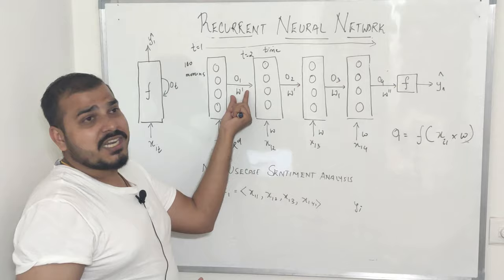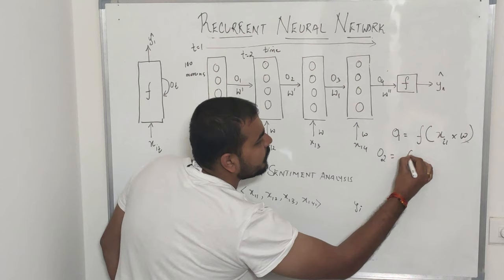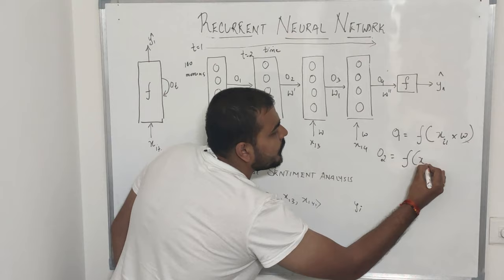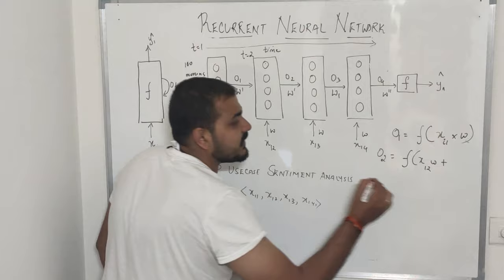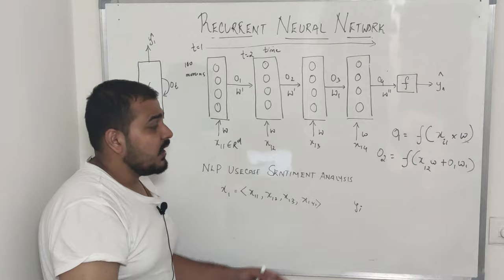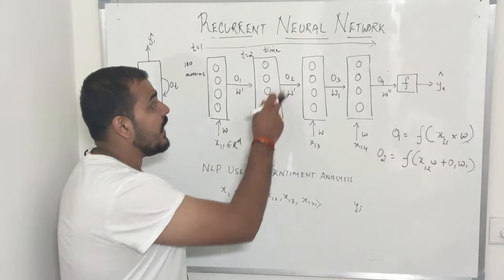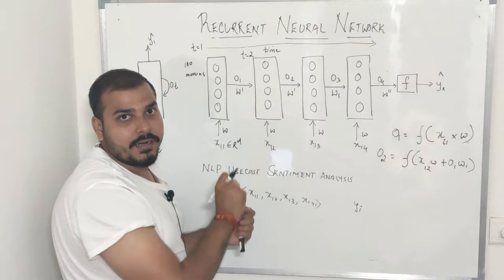So W' is my weight which will get initialized for this particular output. My O2 will be nothing but a function of X12 multiplied by W plus O1 multiplied by W'. This is very, very important because this is what happens in forward propagation — and in back propagation, the derivative of all this will get calculated. Remember, O2 is completely dependent on X12 and O1. That is how the sequence is actually kept — the sequence information is actually maintained.